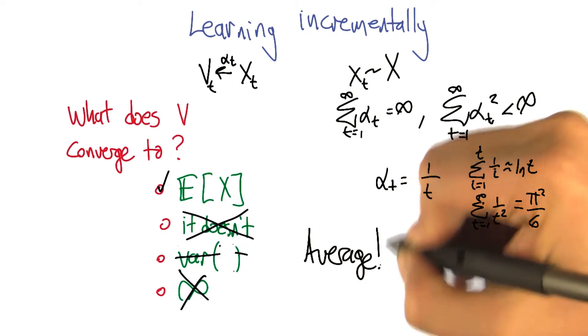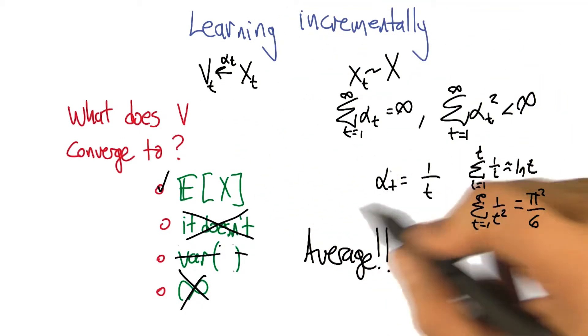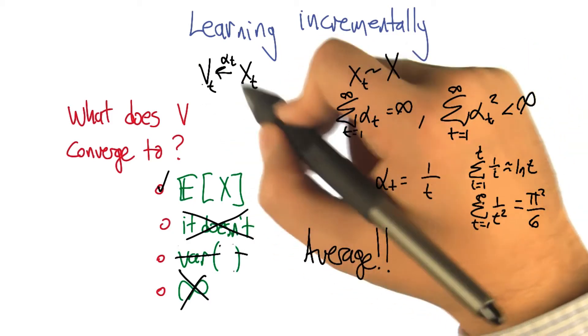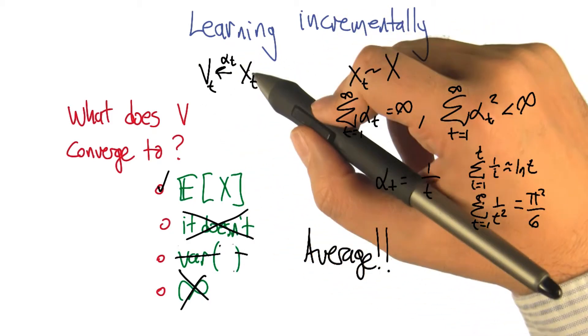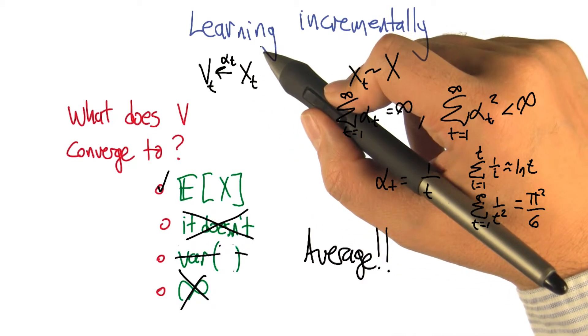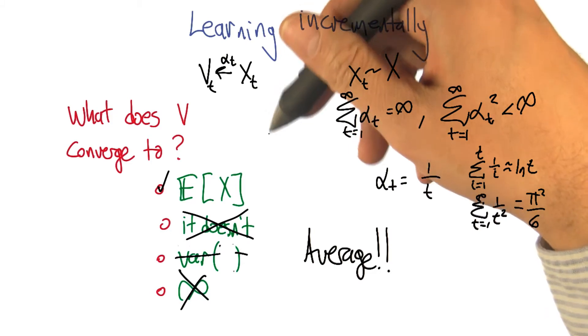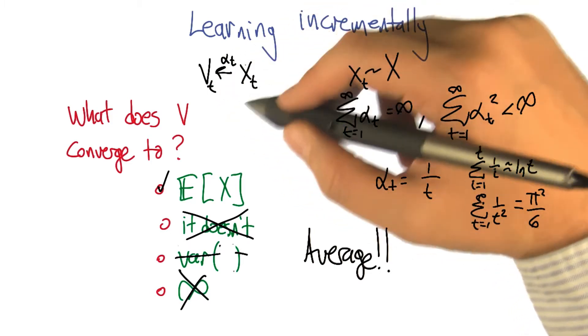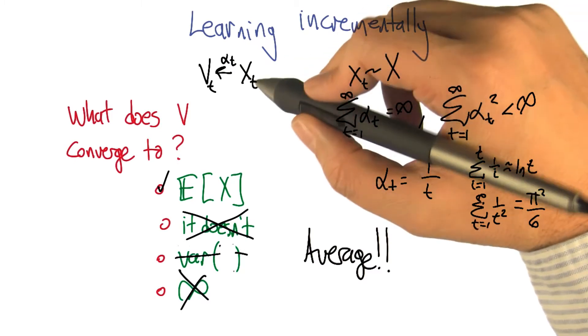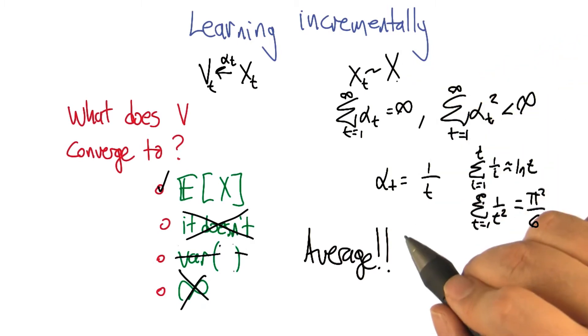So the expected value of x, right. So it turns out that this is actually a way of computing the average by just repeatedly sampling and updating your values. And the way to think about it is that sometimes the x values that we draw are going to be a bit above the average and it's going to pull the v value up. Sometimes it's a little bit below the average and it's going to pull the value down. But in the limit, all those pulls and pushes are going to cancel out and it's going to settle in on the actual average value, the expected value of this random variable.